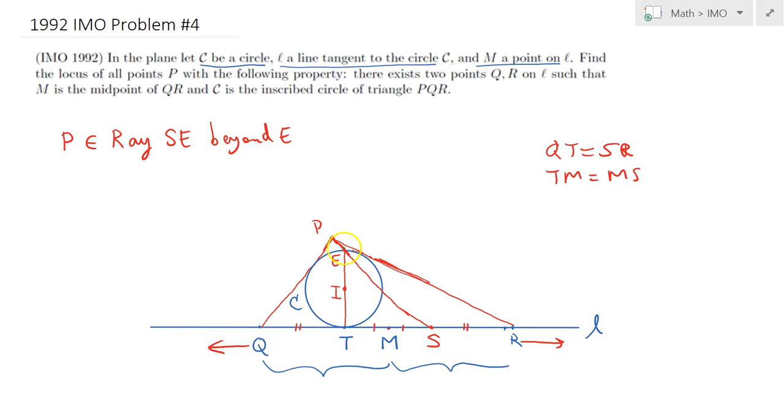Therefore I claim that the location of the point P is on this ray starting at point E but not containing E and extending outwardly. Now this location, ray SE beyond E, is in a sense constant, so it only depends on the givens of the problem, namely the three things: the circle, the line tangent to the circle at point T, and the point M. So obviously S only depends on M and the point of tangency between the circle and the line, so its location is unique.